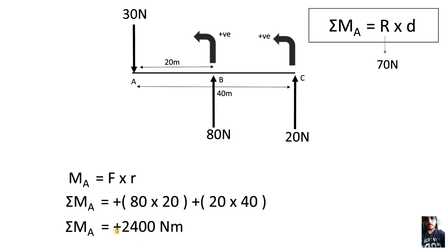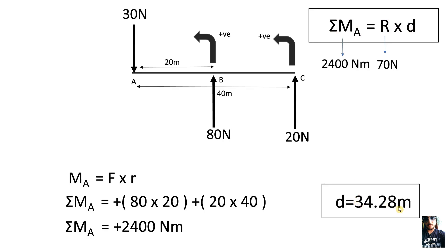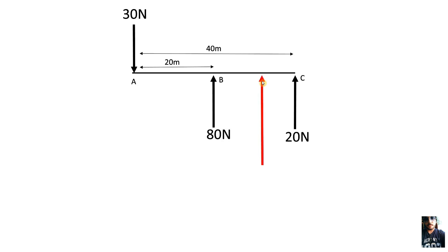Now because the net moment is positive, it is in the anticlockwise direction. Using Varignon's theorem, the 70N resultant force will be acting at a distance of 34.28 meters from point A. So this is how we use Varignon's theorem to find the resultant force distance from any given point, and we have also solved a numerical.